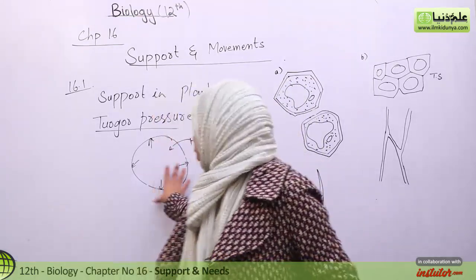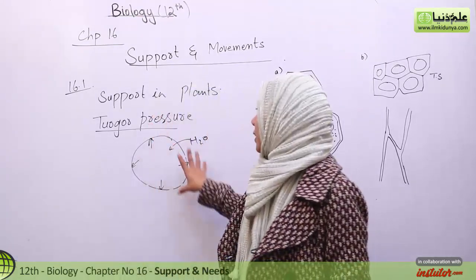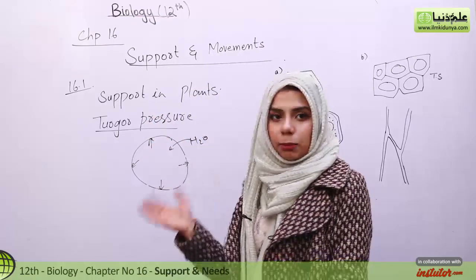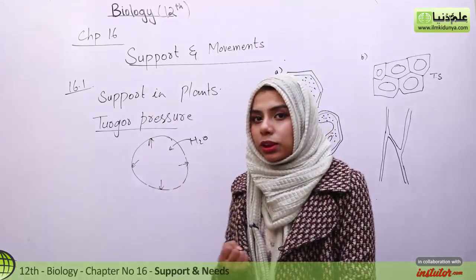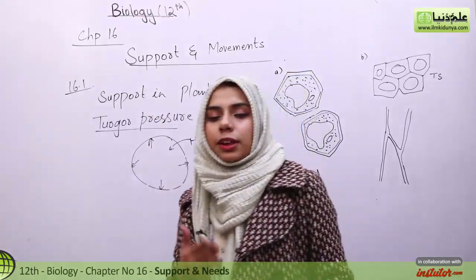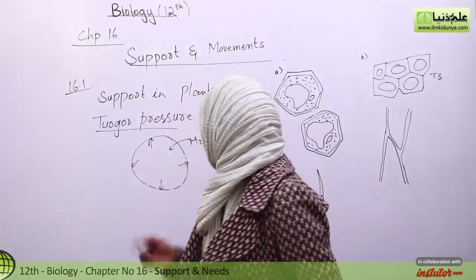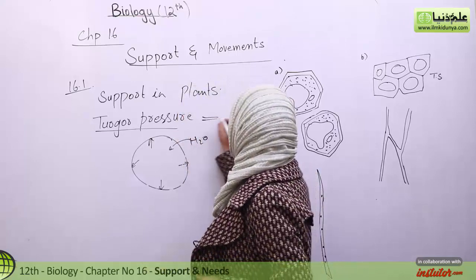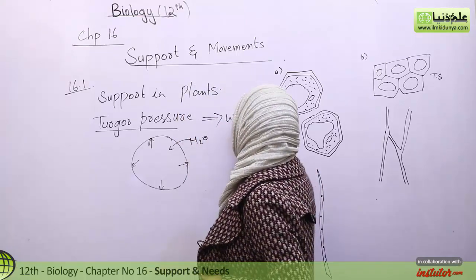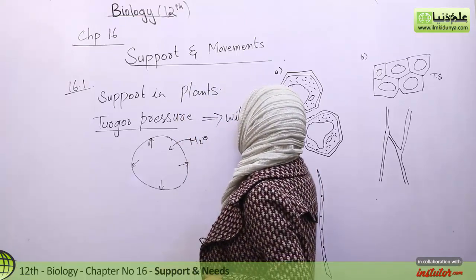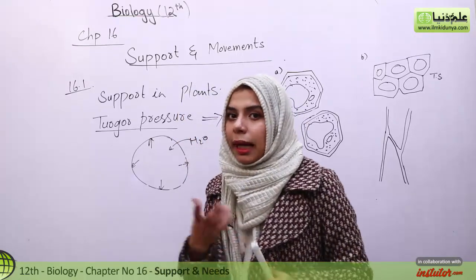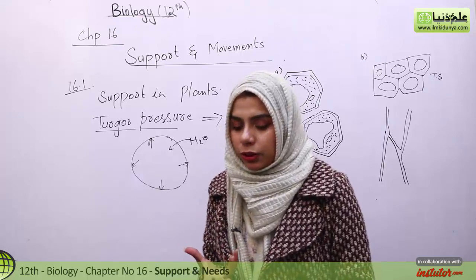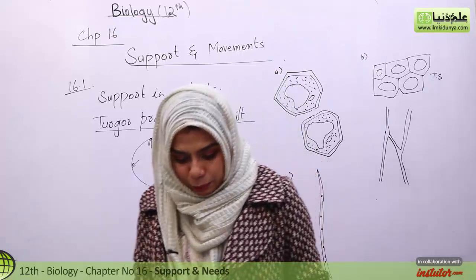If turgor pressure is reduced and turgidity is lost, then the plant will become flaccid — it will become wilted.